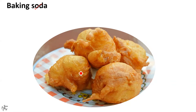Also, baking soda is added to soften pulses such as peas and kidney beans before and during cooking to reduce cooking time. The main effect of baking soda is to modify the pH of the soaking water as well as cooking water, which in turn softens the hard external shells of peas, kidney beans etc. This eventually makes cooking faster.